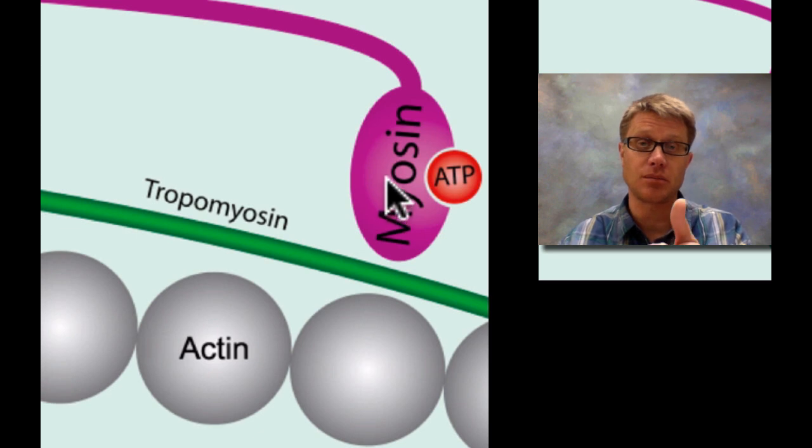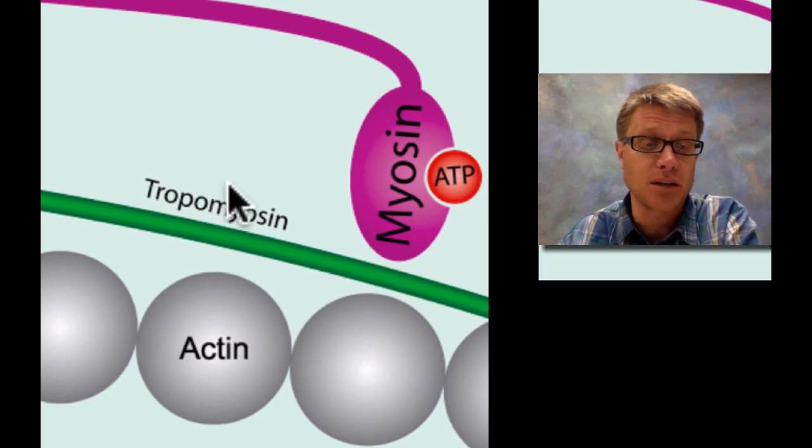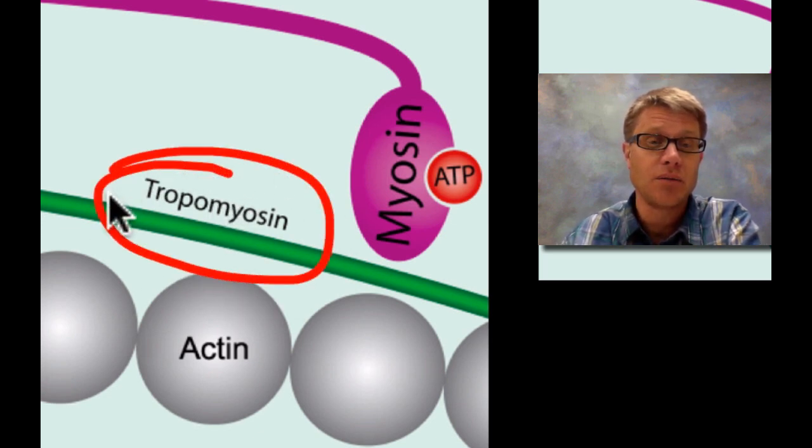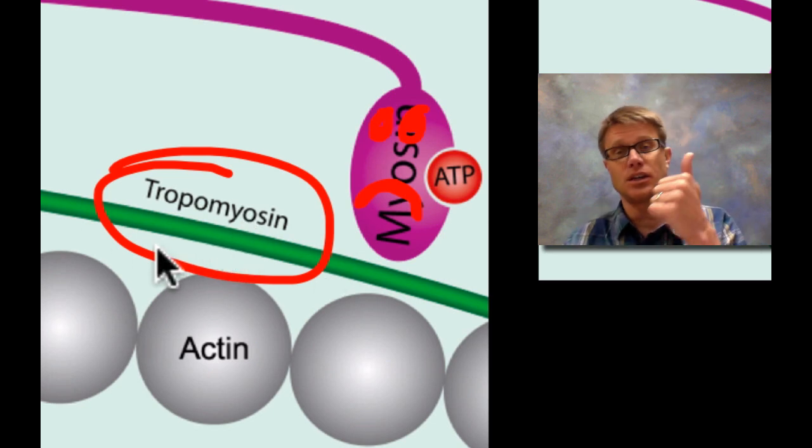And to get access, it can't get access because there's this tropomyosin which is acting as a block. So here's myosin. Myosin is very, very sad because myosin would love to get to actin, but actin is over here. It's blocked. So we have this tropomyosin in the middle. And so what's the other thing that we need? We need ATP.